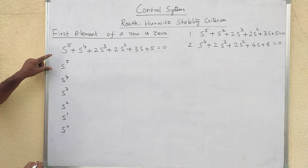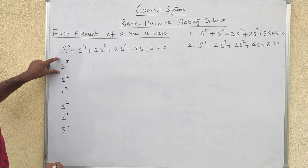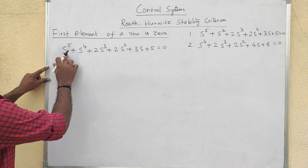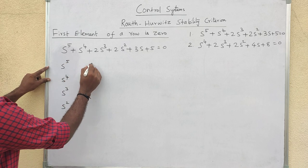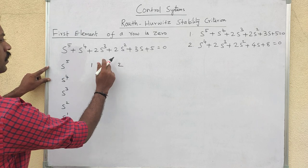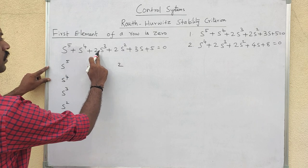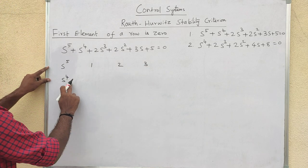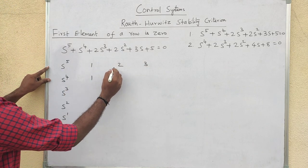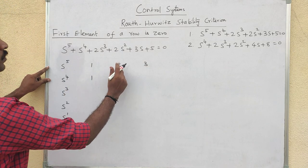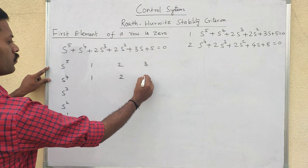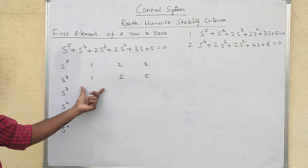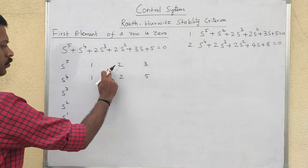As usual, we arrange the Routh array. The odd polynomial row: S⁵ gives coefficient 1, S³ gives 2, S¹ gives 3. The even polynomial row: S⁴ gives 1, S² gives 2, S⁰ gives 5. Now we apply the RH method.